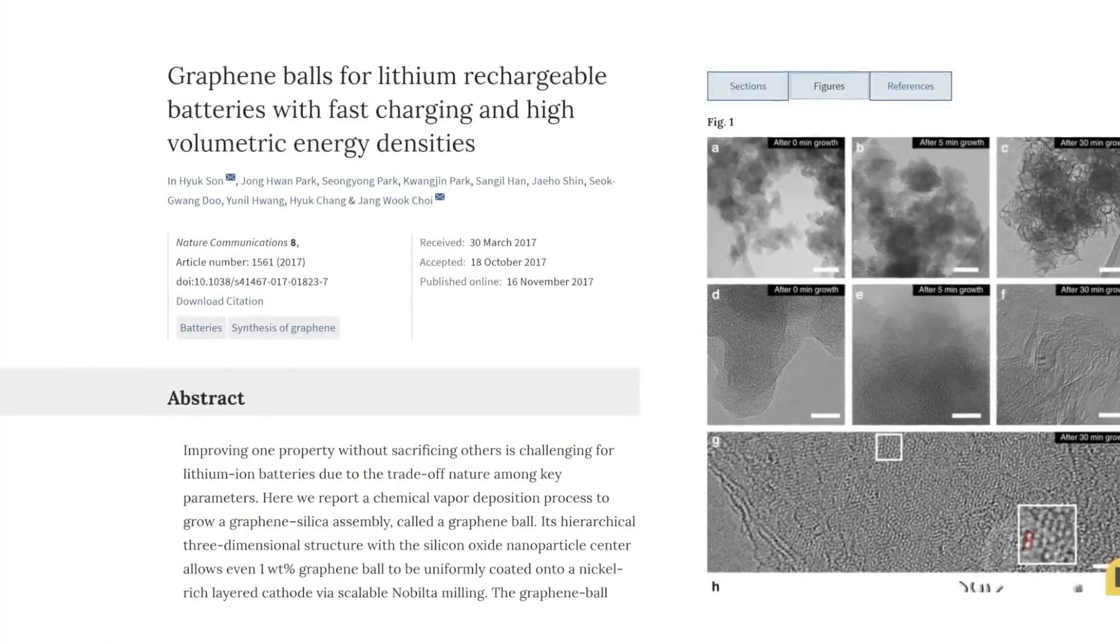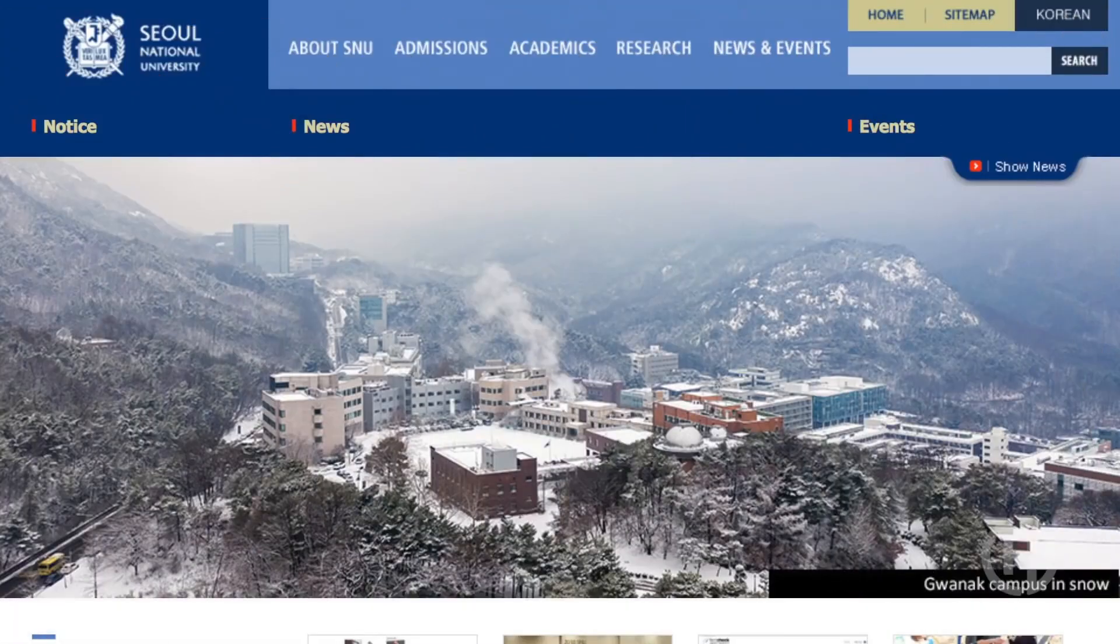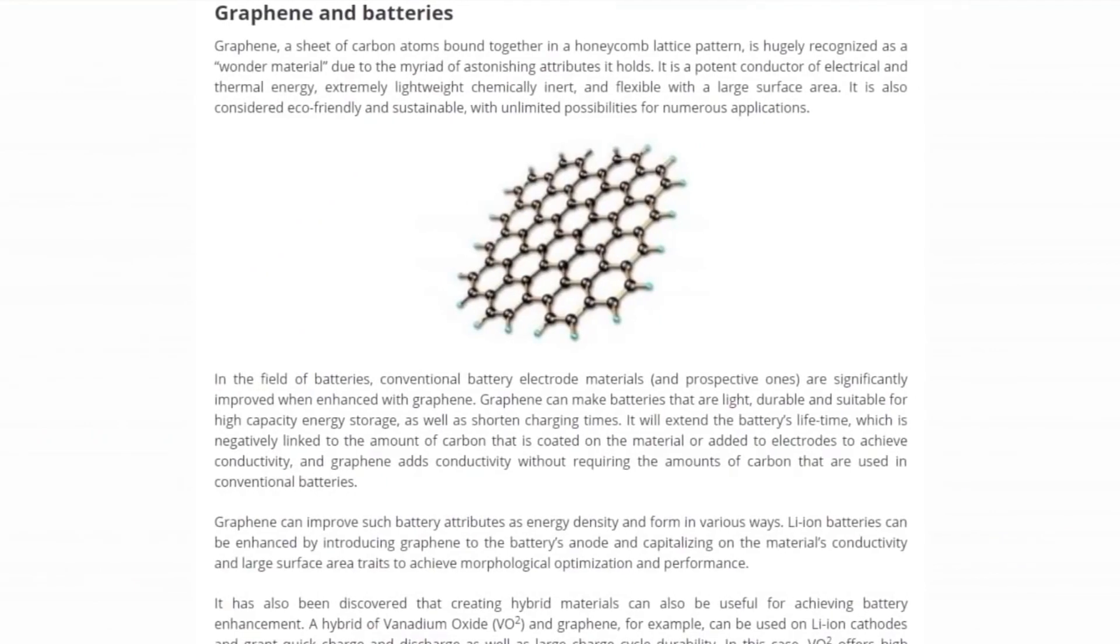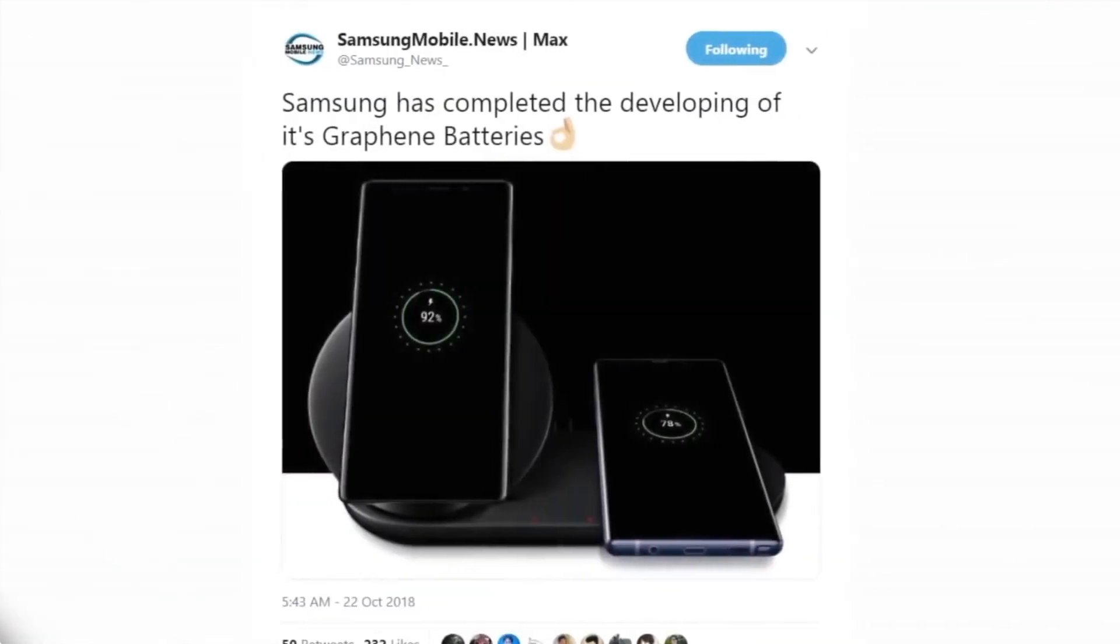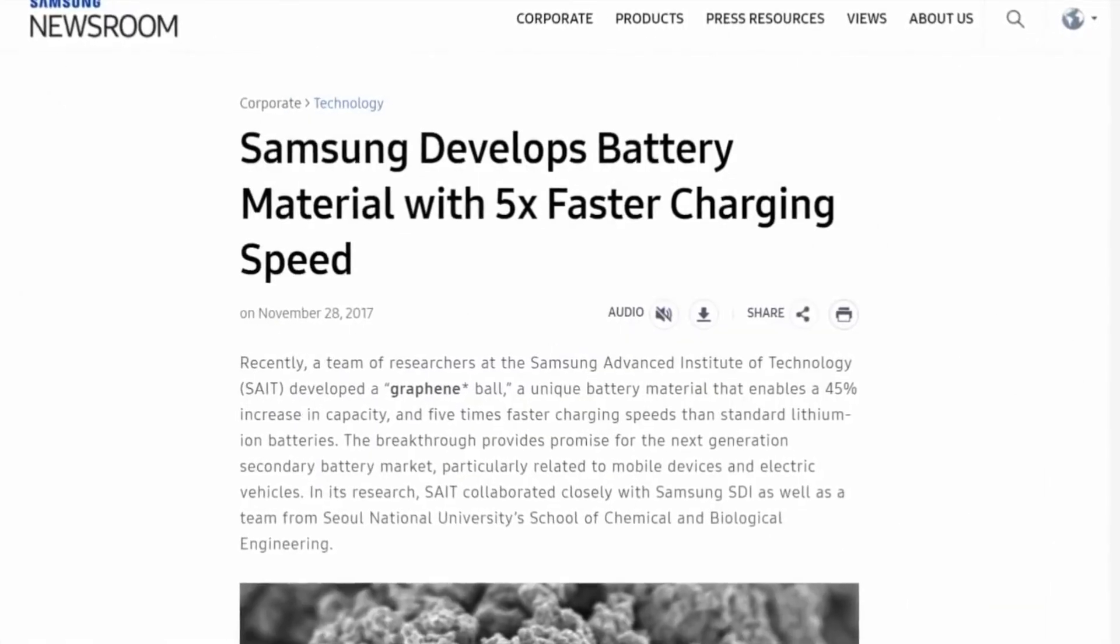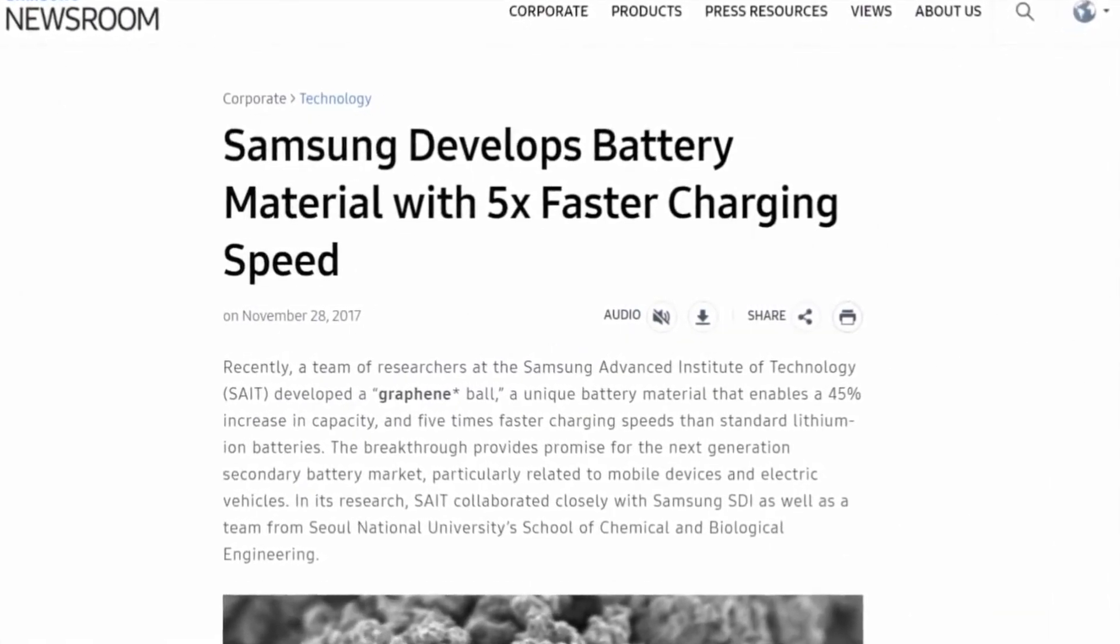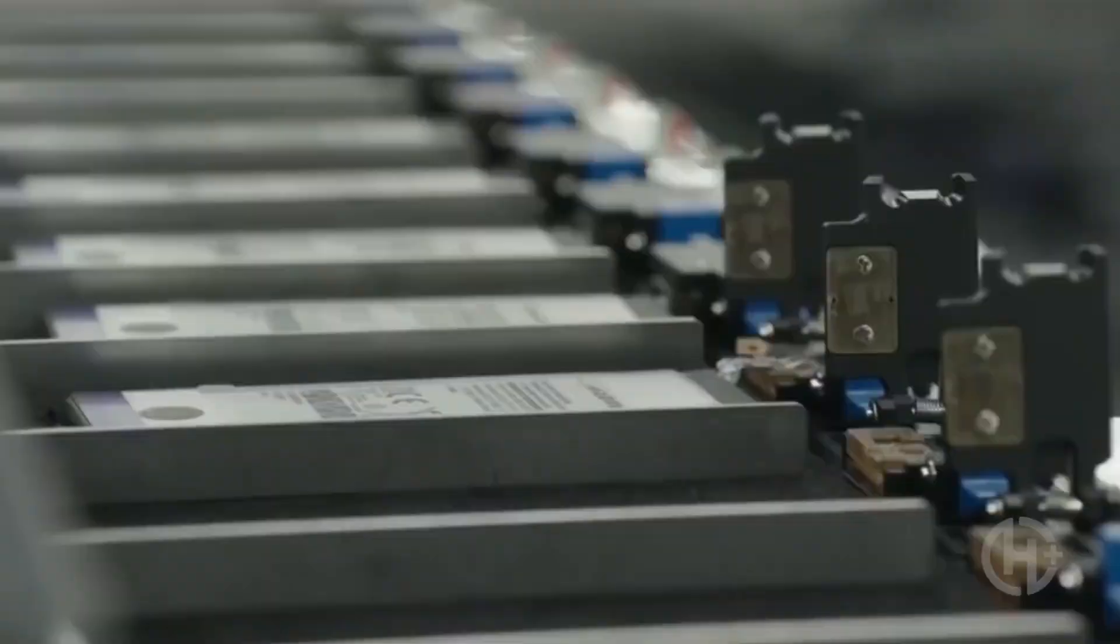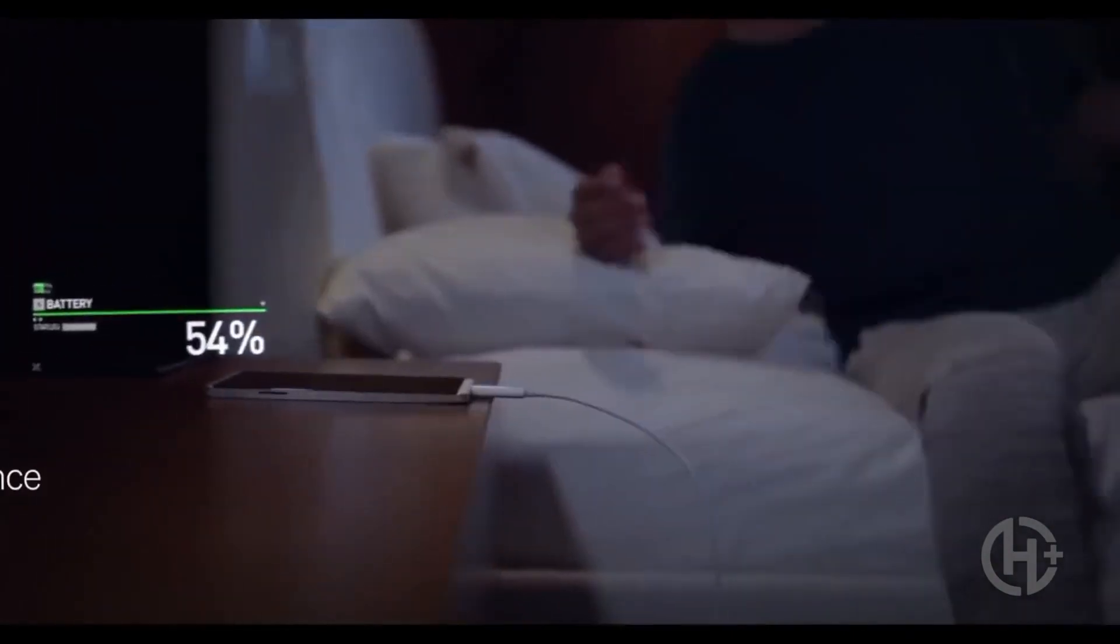Recently, scientists at the Samsung Corporation, in collaboration with Seoul National University, found a way to synthesize graphene into beads with silicon dioxide, allowing them to increase their battery capacity by 45% and their charging speeds by 500%. Comparatively, Samsung's graphene batteries would only have about 12 minutes of charge time in comparison to an hour-long charge time for conventional lithium-ion batteries.